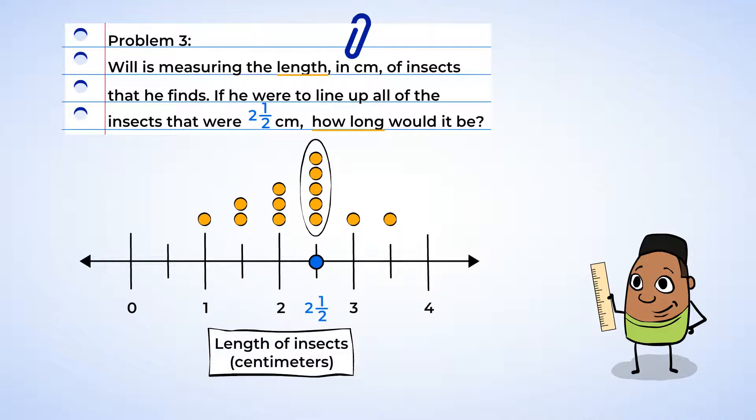Here is two and a half on the line plot. It's exactly halfway between two and three. And there are one, two, three, four, five. Five dots. And that means five insects.